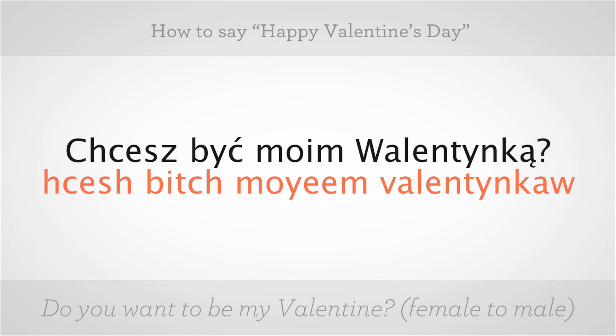Now, if you want to say 'Do you want to be my valentine?' you say, chcesh bec moim valentinkom? Chcesh bec moim valentinkom? Now, that's how a female says it to a male. Let's break this down. The C is silent, and then the SZ makes a SH sound, so it's chcesh.